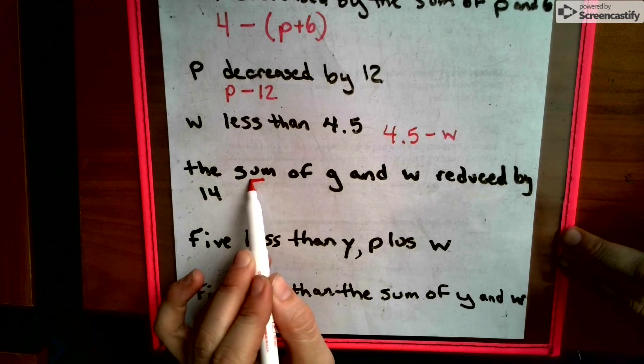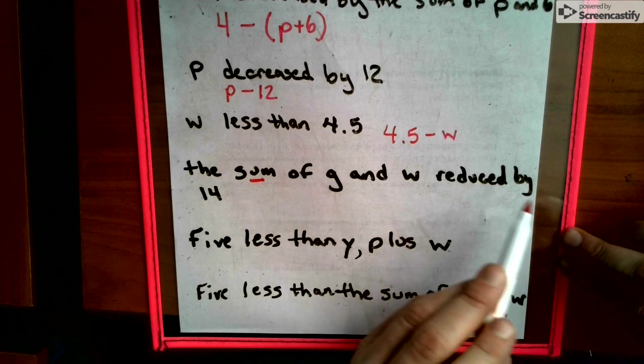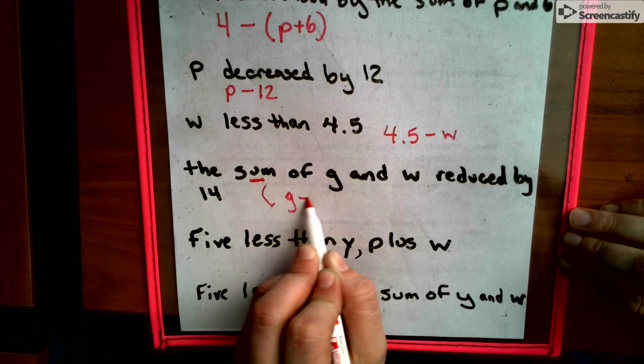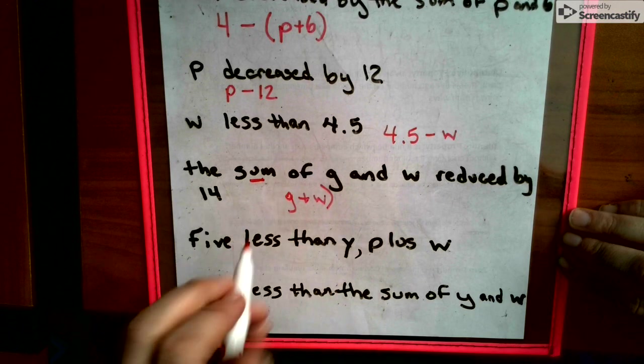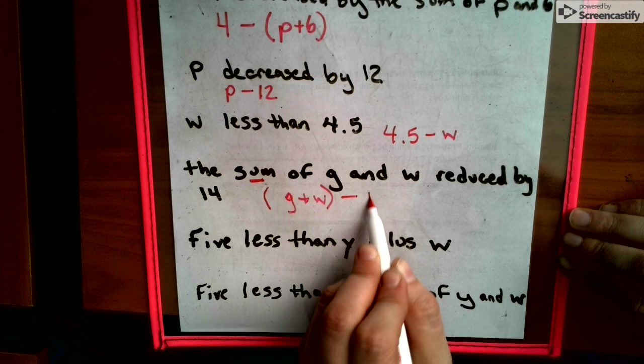The sum, meaning addition, of G and W reduced by 14. So we have to have the sum of it - we have to have the answer to G plus W first, before we can reduce it by 14.